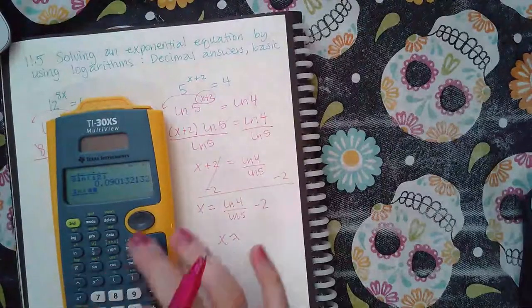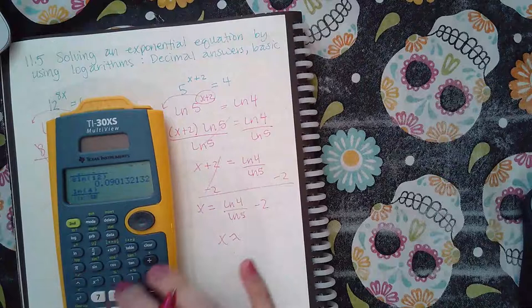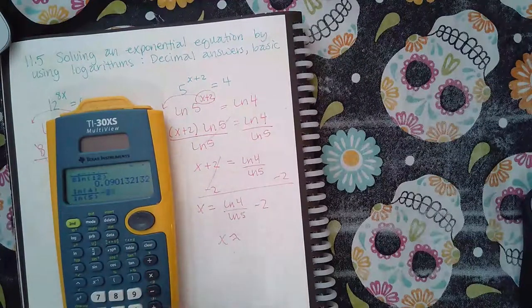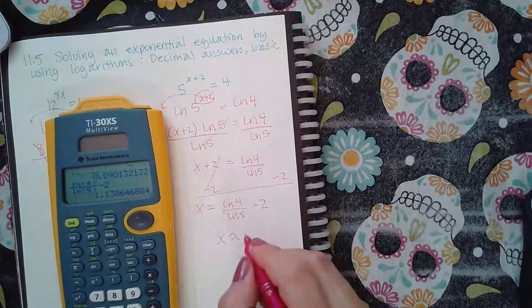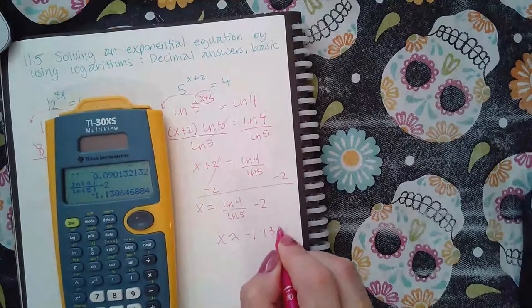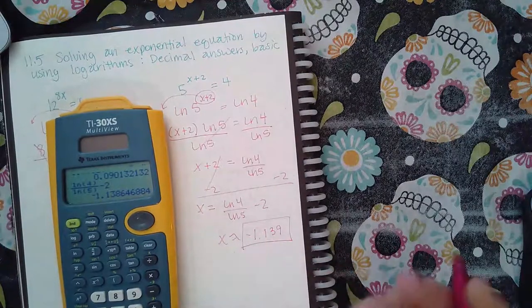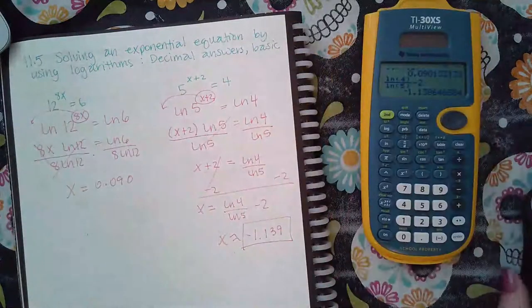So fraction ln of 4 over ln of 5. And then just a minus 2 off to the side. I get negative 1.139. And that's what they want for their decimal answer.